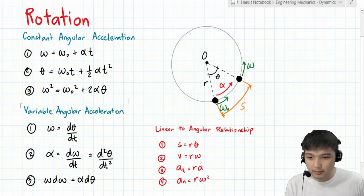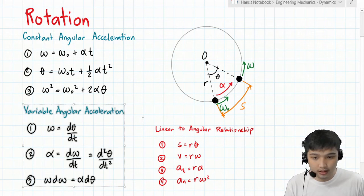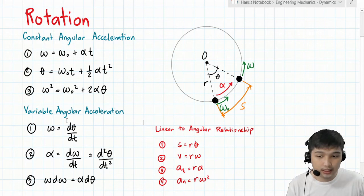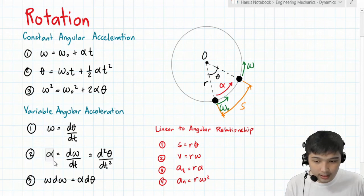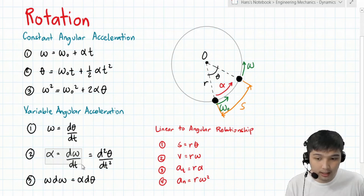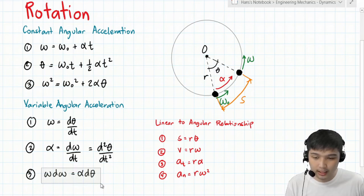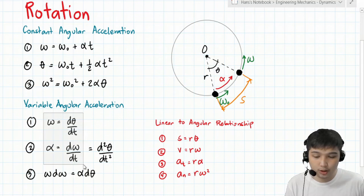For variable angular acceleration, it is synonymous with rectilinear motion with variable acceleration. If you recall, v equals ds/dt — similarly, angular velocity omega equals d-theta over dt. For acceleration, a equals dv/dt — similarly, alpha equals d-omega over dt, which is also the second derivative of theta with respect to time t. The third relationship is derivable by dividing equation 1 and equation 2, giving omega d-omega equals alpha d-theta.